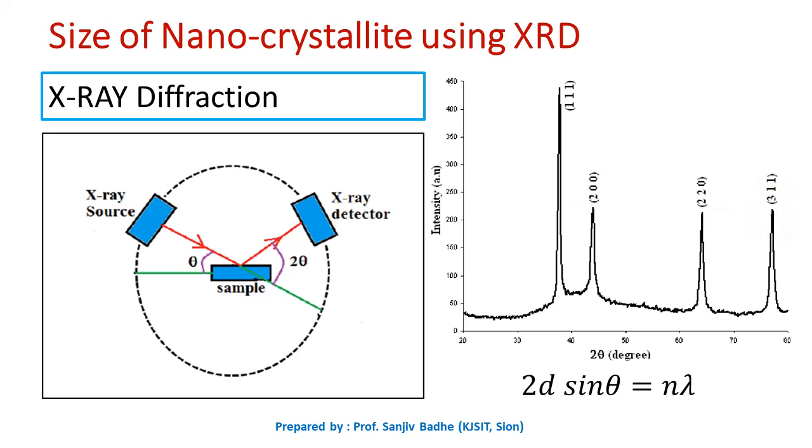This maximum occurs when Bragg's law of X-ray diffraction is satisfied: 2d sin theta is equal to n lambda. So whenever this law is satisfied, we will get this kind of peak.